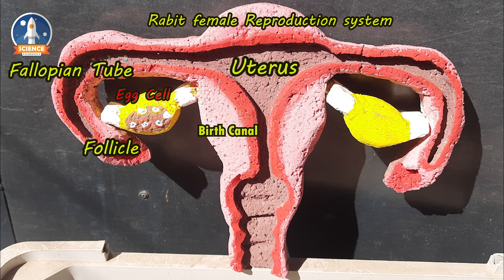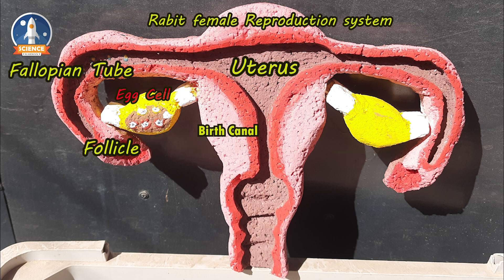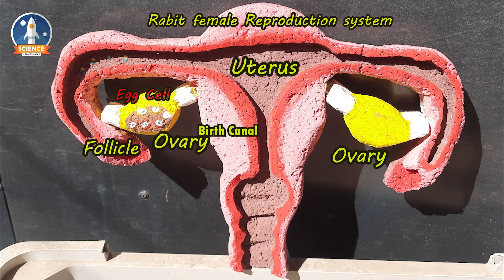The embryo develops into new offspring in 30 to 32 days, after which it is born. If you like our video, please subscribe, like and share, and press the bell icon for new interesting information videos.